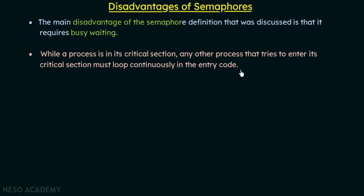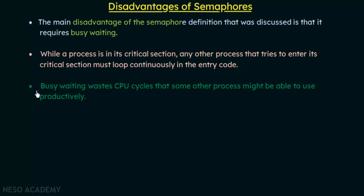That is what we mean by busy waiting. Busy waiting is a problem because it wastes CPU cycles that some other process might be able to use productively. When a process is stuck looping in the entry code, it is still consuming CPU just to spin in that while loop — CPU that could have been used by another process for productive work.